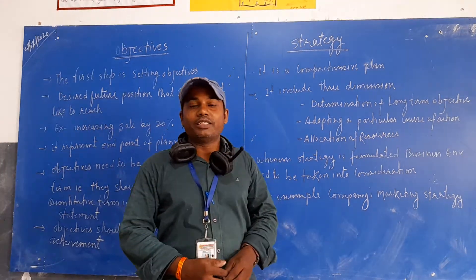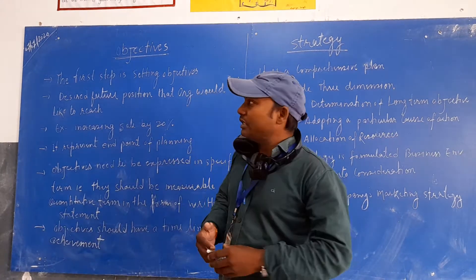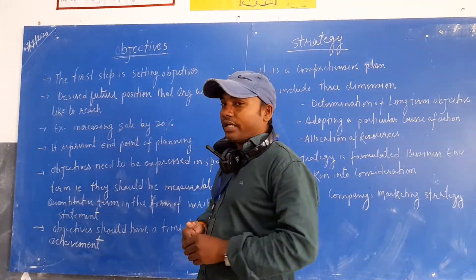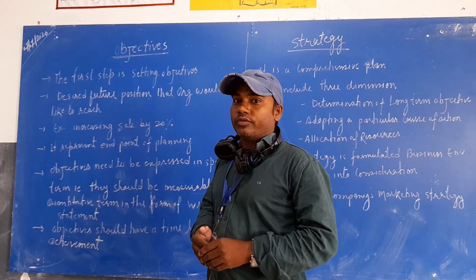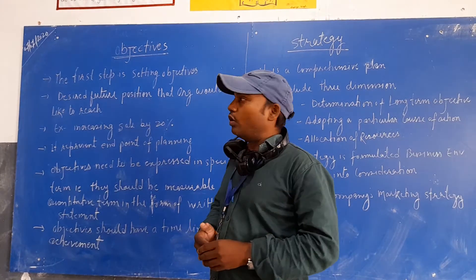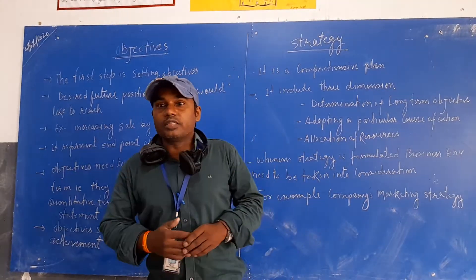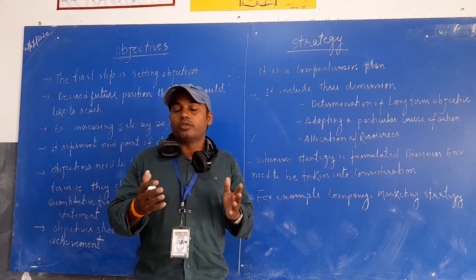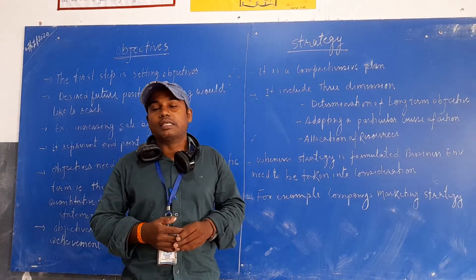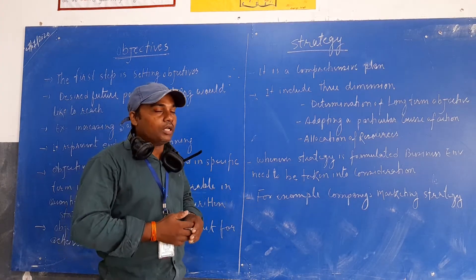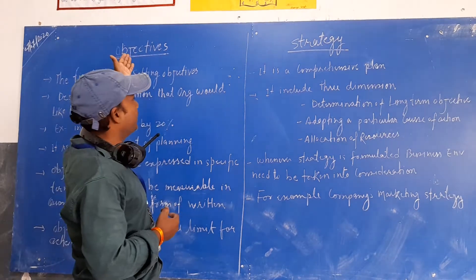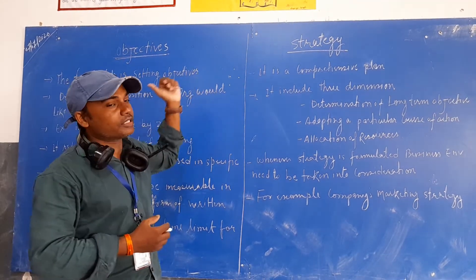Hello students, welcome to Case 4.9 classes. In the same chapter, we will continue with class performance. The planning chapter is continuing and in the same chapter we are going to discuss another topic known as the objective and the strategy. We have discussed the types of plans on the basis of the use of the plan and the length of the plan — the single use plan and the standing plan. In this video we are going to discuss another type of plan which is known as the objective and the strategy.